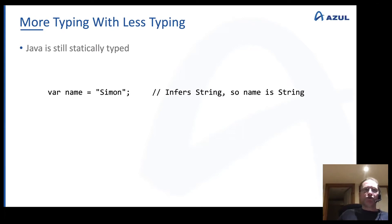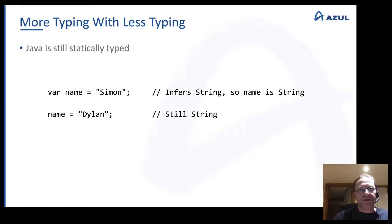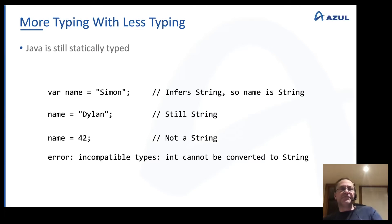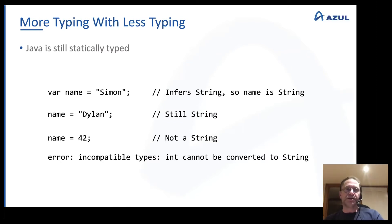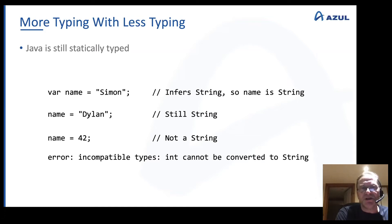Unlike JavaScript, Java is still very much statically typed when using var. If I say 'var name = "Simon"', the compiler infers name is a String. I can then reassign a String — 'name = "Dylan"' works fine. But if I try 'name = 42', the compiler correctly says: incompatible types — int cannot be converted to String. The type is set at the point the variable is created, and there's no way to change it dynamically.